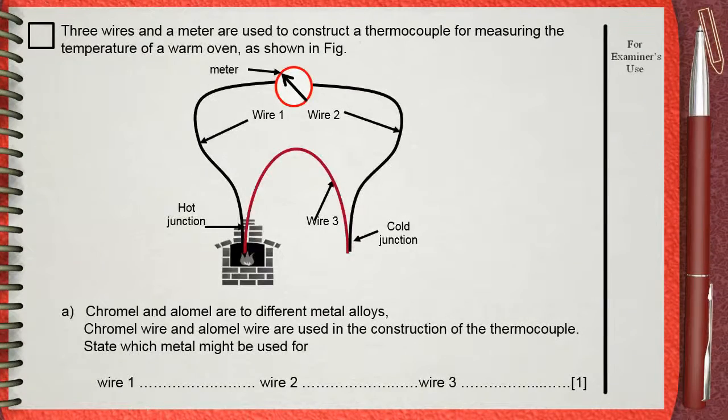Three wires and a meter are used to construct a thermocouple for measuring the temperature of a warm oven as shown in figure.